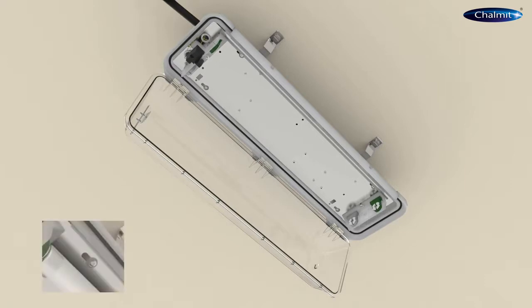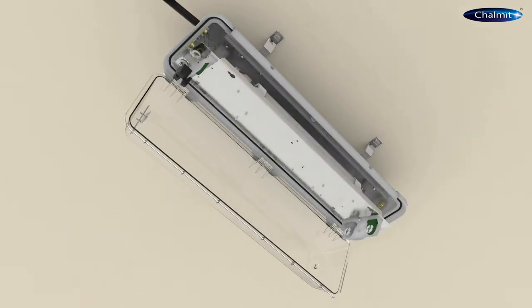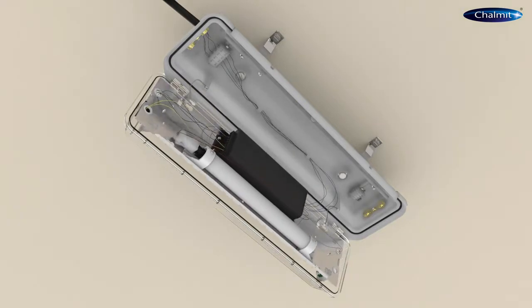Loosen the four screws, then slide and lower the gear tray away from the GRP body suspended off the existing hanging straps.